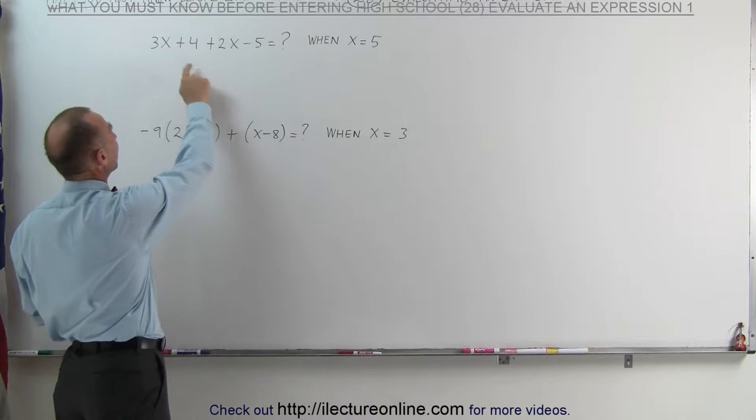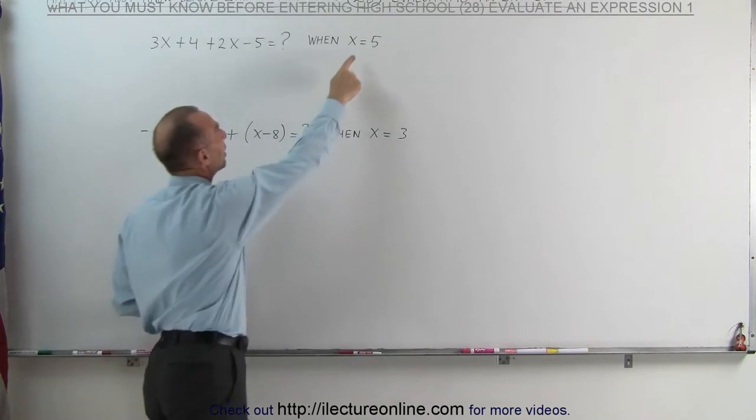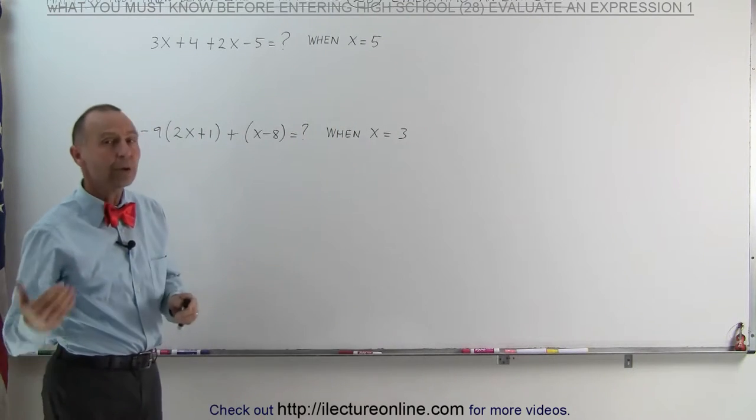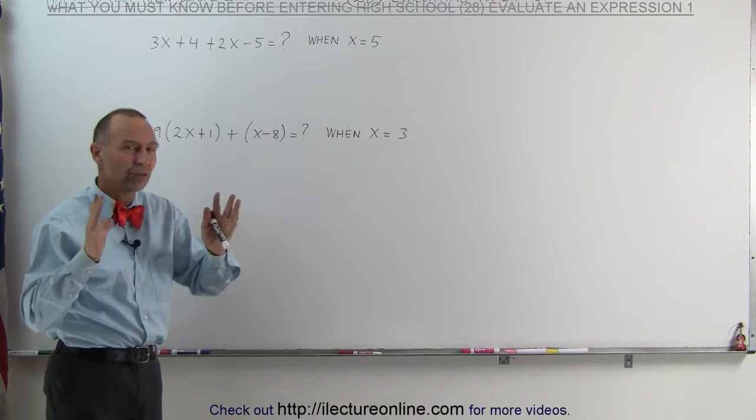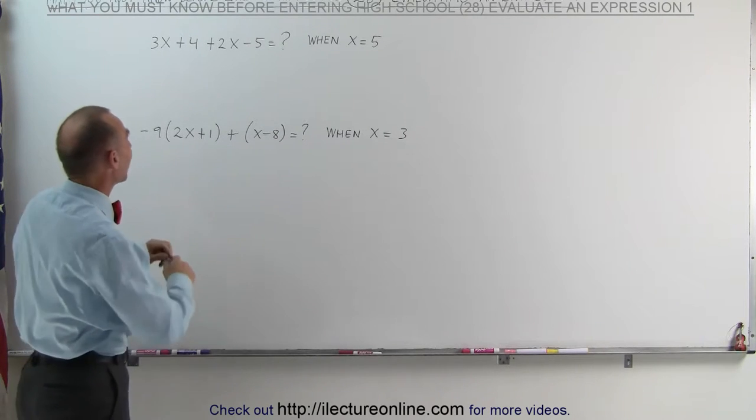In the first example, we have an unknown variable x. What is that expression equal to when x is equal to 5? What we're going to do is, just like before, we're first going to simplify the expression and then we're going to substitute the value of 5 for each x that we have.